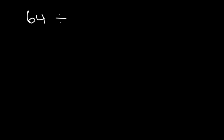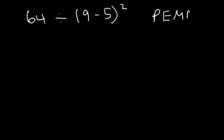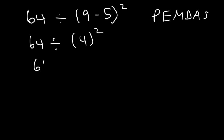Here's the last parentheses example. Should we divide first or work inside the parentheses? The general rule: always evaluate the stuff inside the parentheses first. 9 minus 5 is 4. 4 squared is 16. 64 divided by 16 is 4.